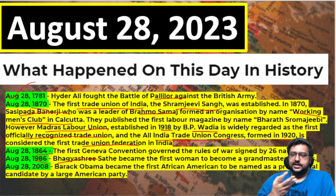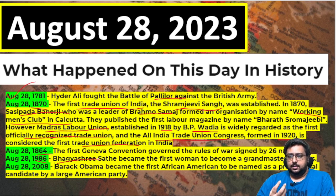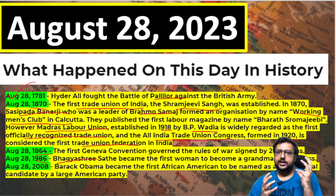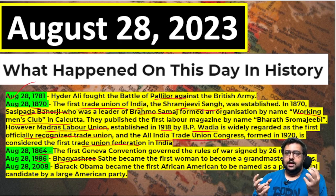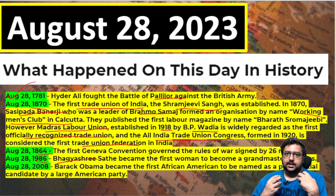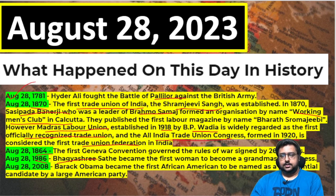This is relevant because India's young chess players were recently in the final eight of the World Chess Championship. Then, on August 28, 2008, Barack Obama became the first African American to be named as the presidential candidate by a major American party. The USA has two main parties — Democrats and Republicans — and Obama being nominated by the Democrats was a historical milestone.